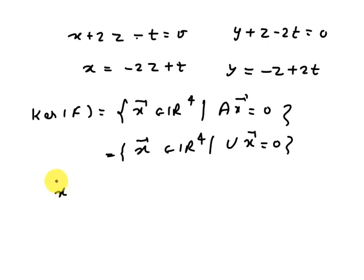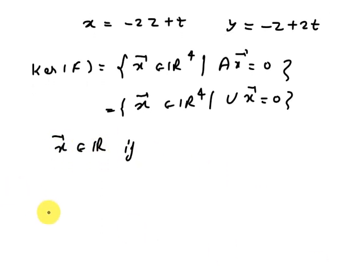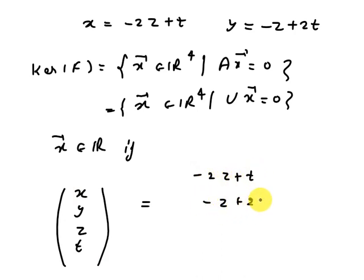So therefore, all elements X bar belongs to R, if X, Y, Z, T equal to minus 2Z plus T, minus Z plus 2T, and Z and T are same.